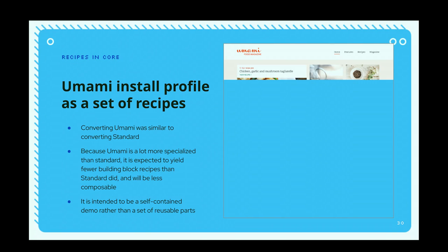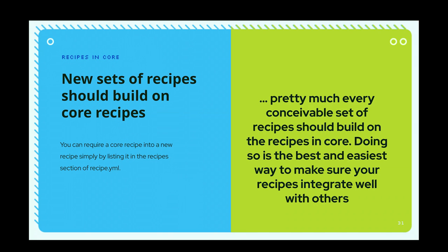There's also been work converting the Umami profile to a set of recipes — probably less reusable since it's more opinionated about the final outcome, but a good reference. These exercises of converting install profiles into recipes have provided useful input on the kinds of config actions needed to eventually replace existing distributions and install profiles. If you're creating your own recipes, try to build on what's already available in core to make your solution more robust and less work to maintain.